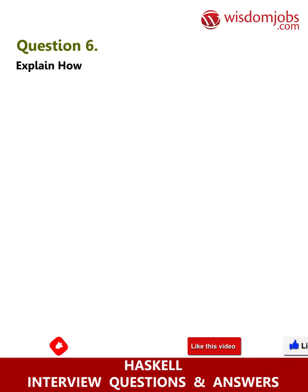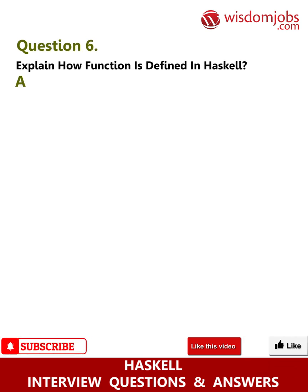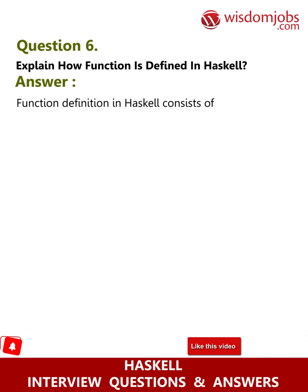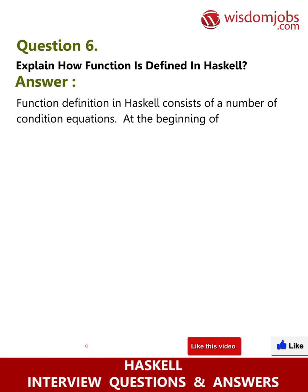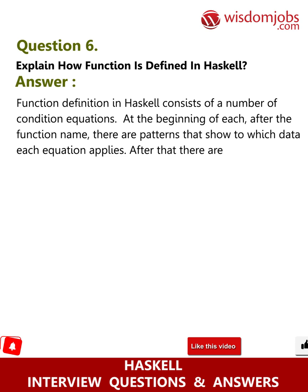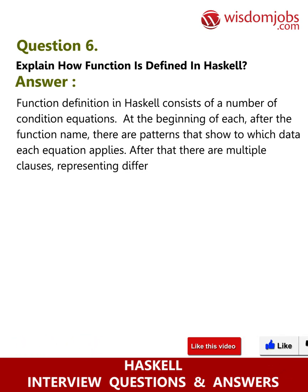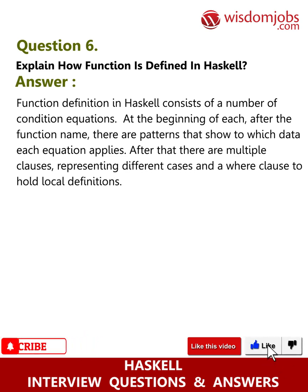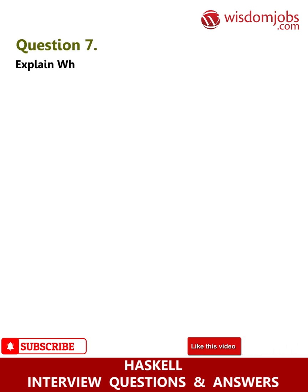Question 6: Explain how a function is defined in Haskell. Answer: A function definition in Haskell consists of a number of conditional equations. At the beginning of each, after the function name, there are patterns that show to which data each equation applies. After that, there are multiple clauses representing different cases, along with a where clause to hold local definitions.